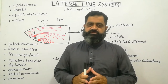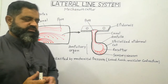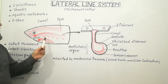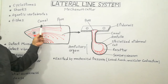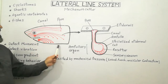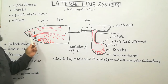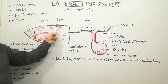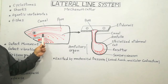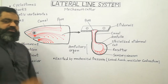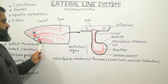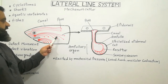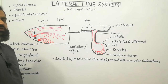First of all, we are going to discuss the structure and anatomy of the lateral line system. I have made a diagram for you. This is an anterior portion of a shark — as you can see in the diagram, this portion of the fish head contains the lateral line system.